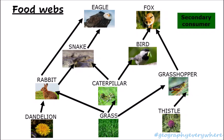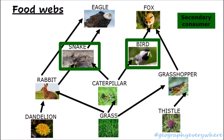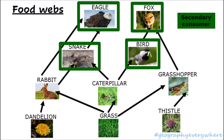The secondary consumer is an animal that eats the primary consumer. The primary consumers were the rabbit, caterpillar, and grasshopper — so who eats them? There's the snake, eating the rabbit and the caterpillar; the bird, who eats the caterpillar; the fox, who eats the grasshopper; and the eagle, who is eating the rabbit.